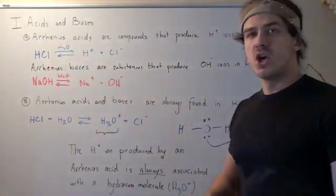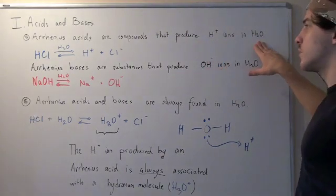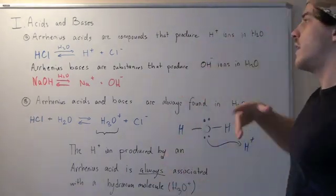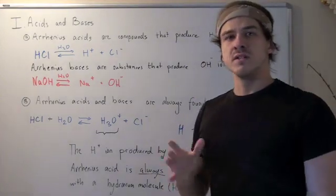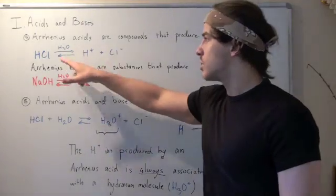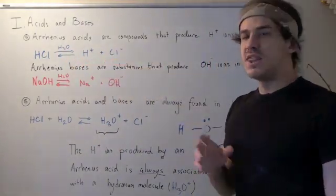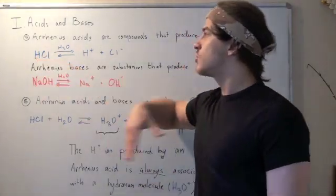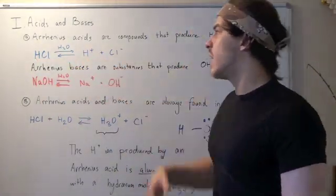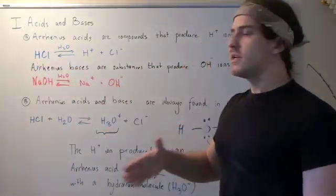Arrhenius acids are those compounds that produce hydride ions in water, or they increase the concentration of H-plus ions found in water. For example, HCl dissociates in water into an H-plus ion and a chloride ion. Because HCl increases the concentration of H-plus ions found in water, by definition, HCl must be the Arrhenius acid.